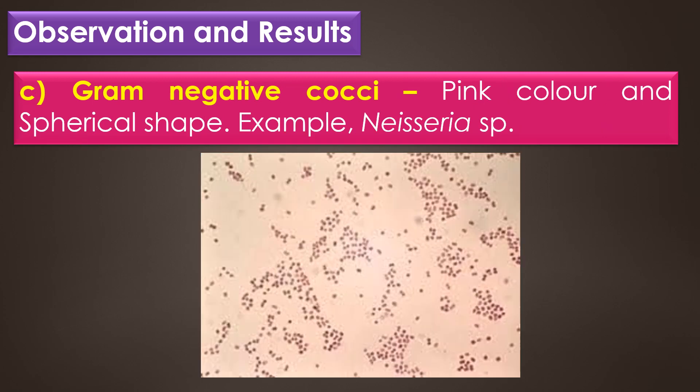Gram negative cocci appear in pink color and spherical shape. The examples for gram negative cocci are Neisseria gonorrhoeae and Neisseria meningitidis. This image shows the gram negative cocci.